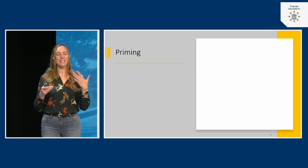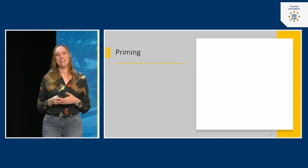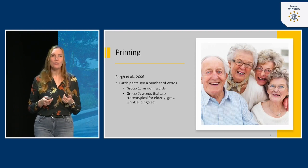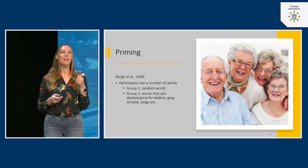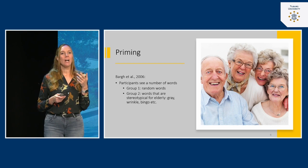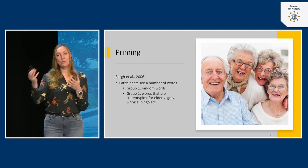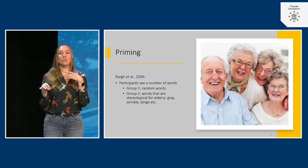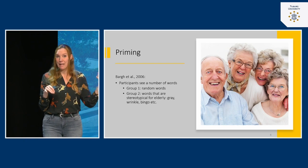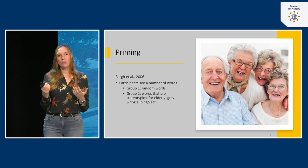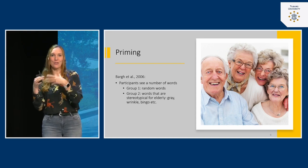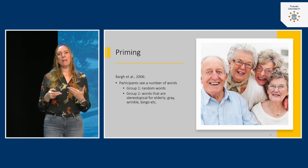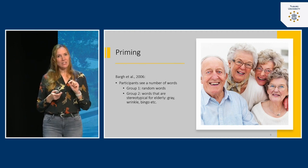This concept of priming has a very big appeal for researchers. Between 2000 and 2010, there was a lot of research on this — for example by John Bargh, who did a very clever study. Participants were randomly assigned to two groups: one group saw random unrelated words on screen, while the other group saw words related to the concept of elderly — like 'gray,' 'wrinkle,' 'bingo' — words that temporarily activate the schema of elderly.